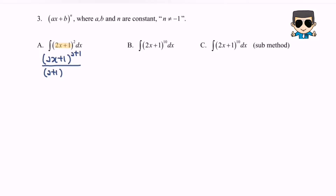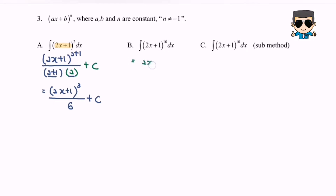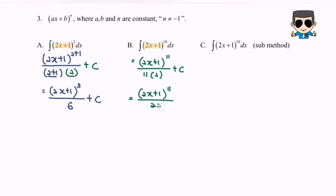We have 2x plus 1 to the power of 2 plus 1 over 2 plus 1. Do remember to differentiate the internal function, which gives us 2 plus C. So finally the answer is 2x plus 1 to the power of 3 over 3, multiplied by 1 over 2, giving us over 6 plus C. For example (b): integrate bracket 2x plus 1 to the power of 10 with respect to x. We get 2x plus 1 to the power of 11 over 11, multiply by 1 over 2 (differentiating the internal function), giving us 2x plus 1 to the power of 11 over 22 plus C.